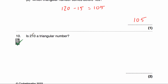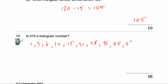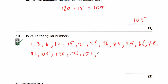Question ten says is 210 a triangular number? We list triangular numbers continuing from where we left off: ..., 105, 120, 136, 153, 171, and then adding 20 gives 191 — wait, adding 19 gives 190, then adding 20 gives 210. Yes, 210 is a triangular number. Later in the video we'll look at questions where we check if numbers are triangular using the formula.